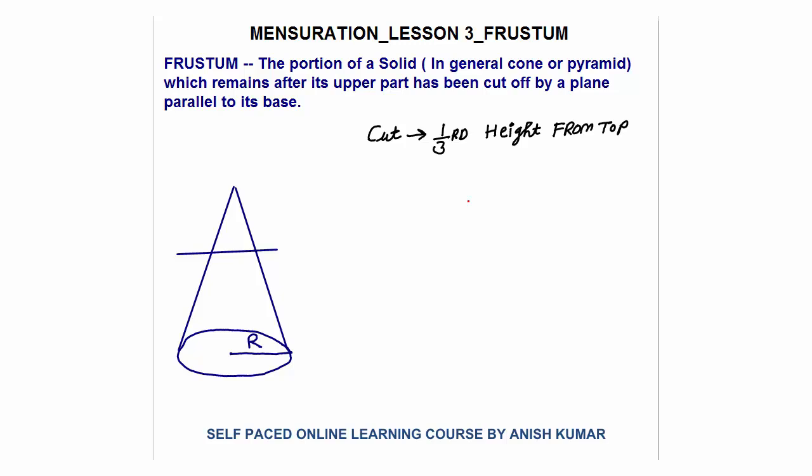Hello everyone, this is mensuration lesson 3. In this I will discuss frustum. A frustum is a portion of a solid — in general a cone or pyramid — which remains after its upper part has been cut off by a plane parallel to its base. The word frustum can be used for any solid, but in general it is used for cone or pyramid.